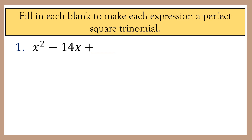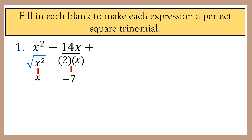We know that the third term should be a perfect square. We first get the square root of the first term: the square root of x squared is x. Then we divide the middle term by twice the square root of the first term: negative 14x divided by 2x is negative 7. Then we square negative 7: negative 7 times negative 7 is 49. So our perfect square trinomial is x squared minus 14x plus 49.